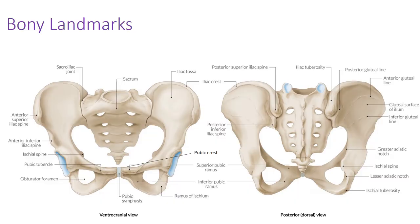Getting started with the anterior medial thigh, the first thing we need to think about is the bony landmarks of the region. This will help inform origins, insertions, and some of the actions of the muscles we will be discussing. Starting with the pelvic bone: we have the sacrum in the back, joined at the sacroiliac joint where the ilium comes to meet the sacrum.